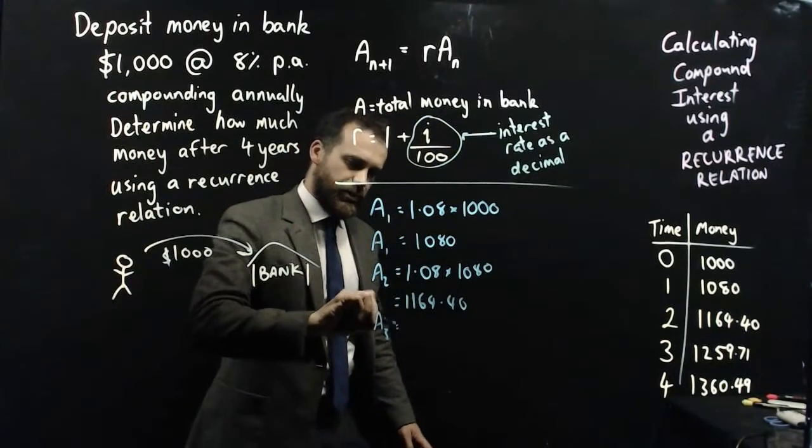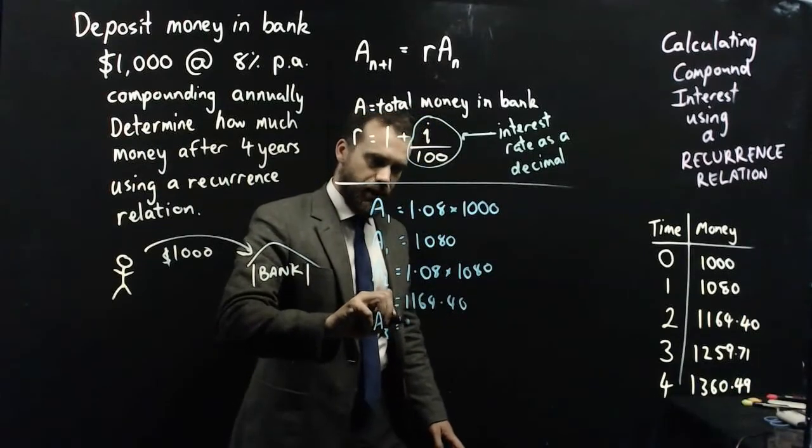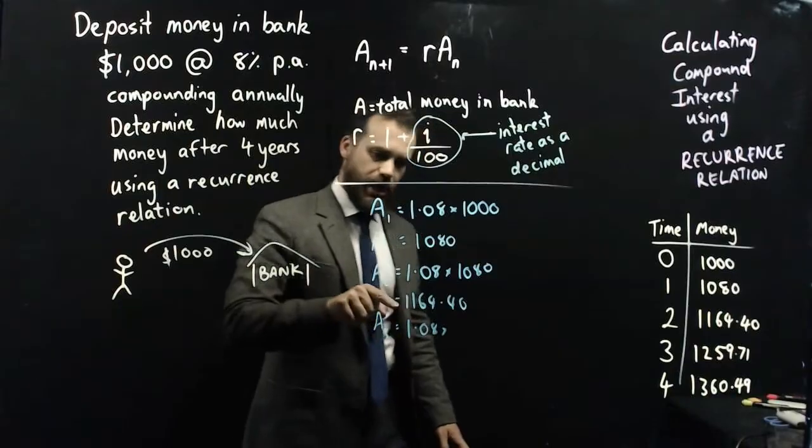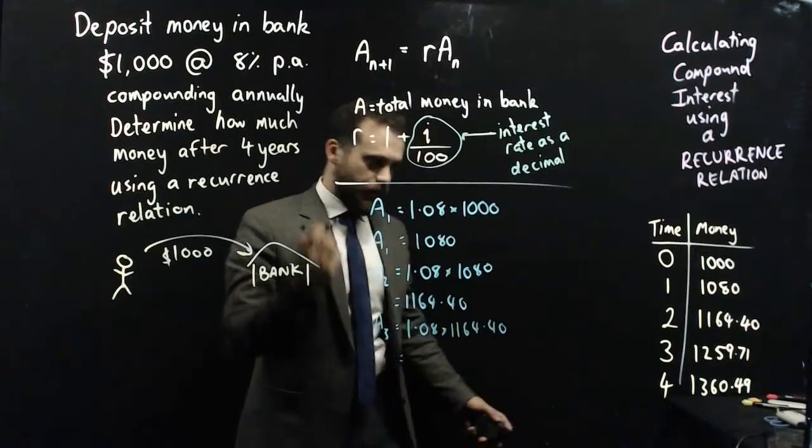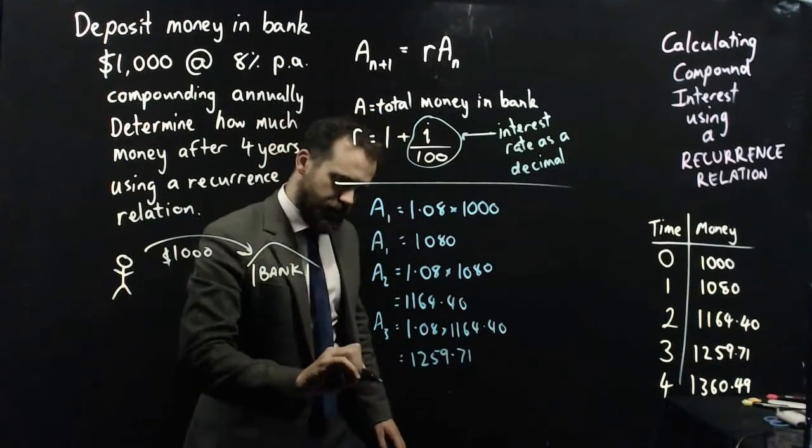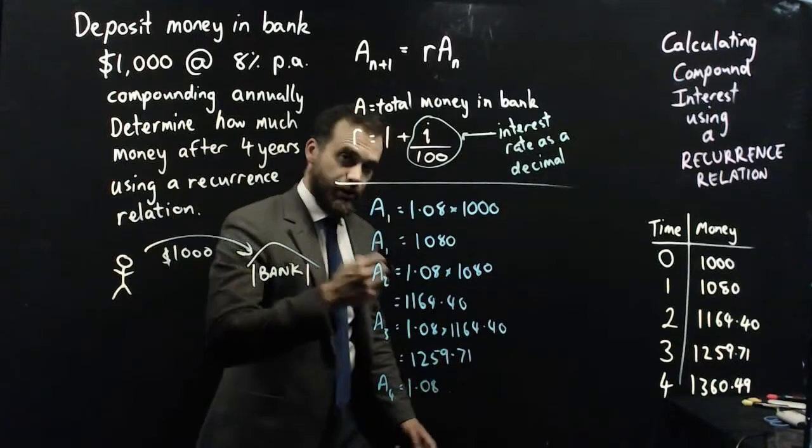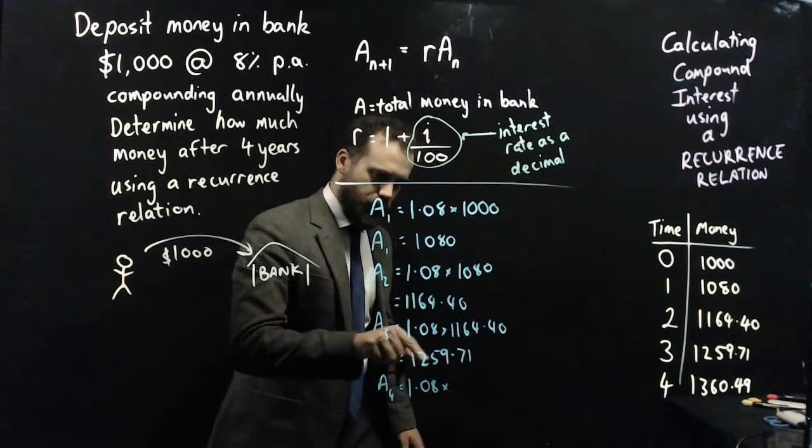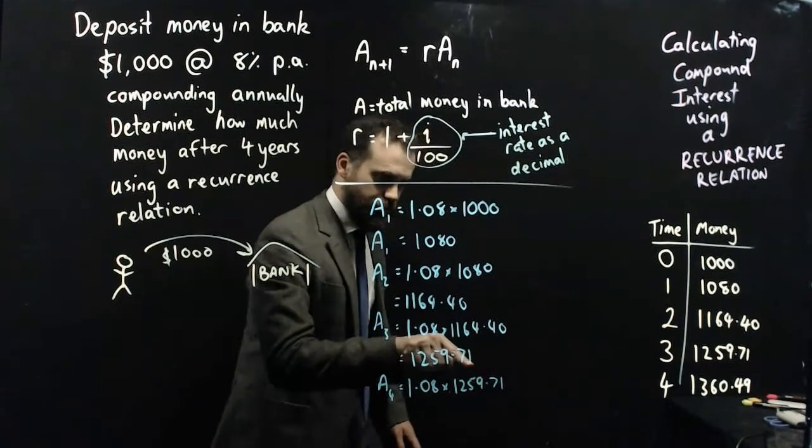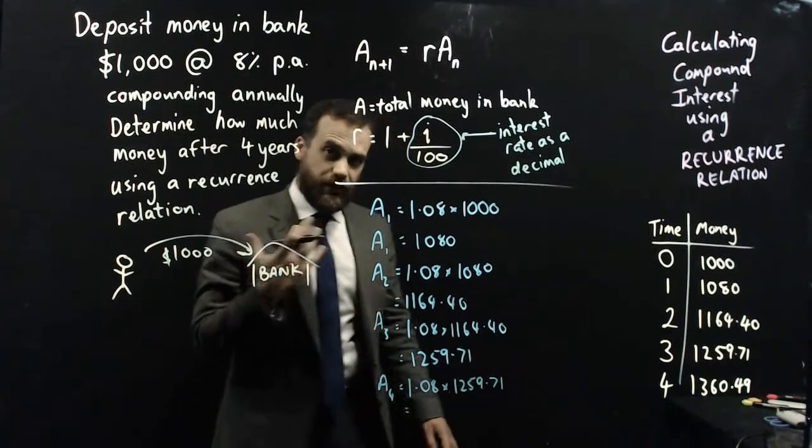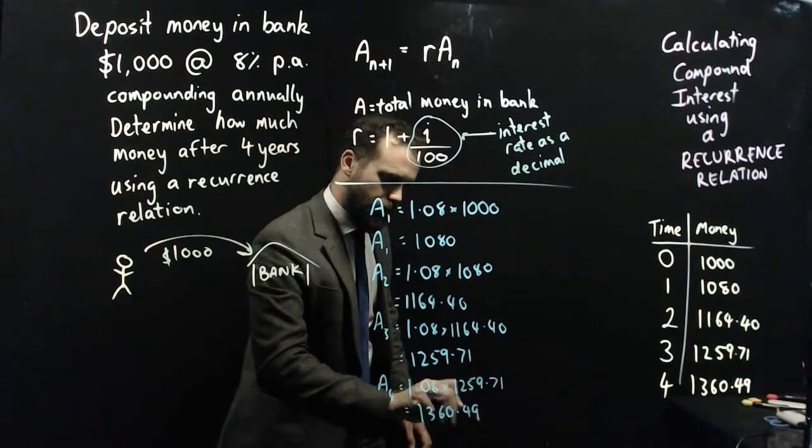We can now say that A3 is equal to r times A2, which is 1,164.40. And finally, we can say that A4 is equal to 1.08, which is our rate, times 1,259.71 - that's A3 - and that's going to be our final answer of $1,360.49.